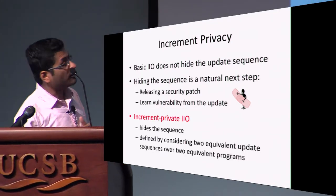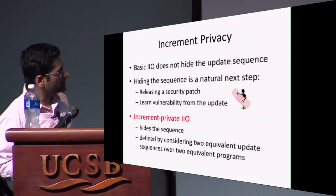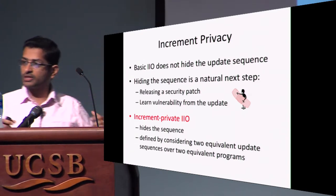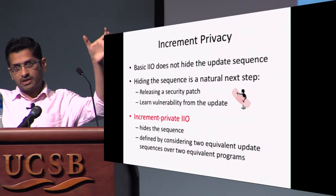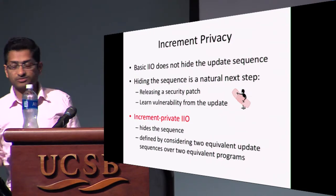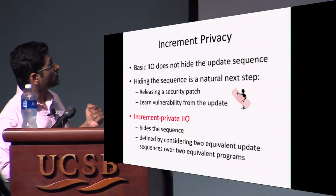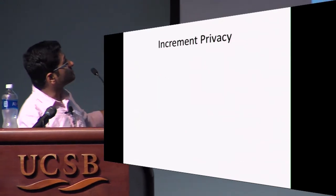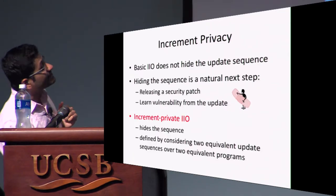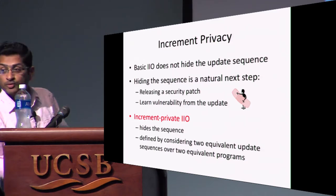To account for that, we define a stronger notion of security. It's a natural extension: we define a notion where you can apply different sets of updates. You still need functional equivalence — so if I apply update to P getting P1, and to Q getting Q1, those updates can be different but the resulting programs must be functionally equivalent. Furthermore, if the updates applied are of roughly the same size, we want to argue computational indistinguishability still holds. We call this increment-private IIO security.